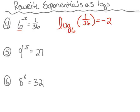Number 5: 9 to the 1.5 power is equal to 27. We're going to rewrite this as a log. The base is 9 — that's this number here. The argument is 27, and it equals to the exponent 1.5. We read this as log base 9 of 27 equals 1.5.